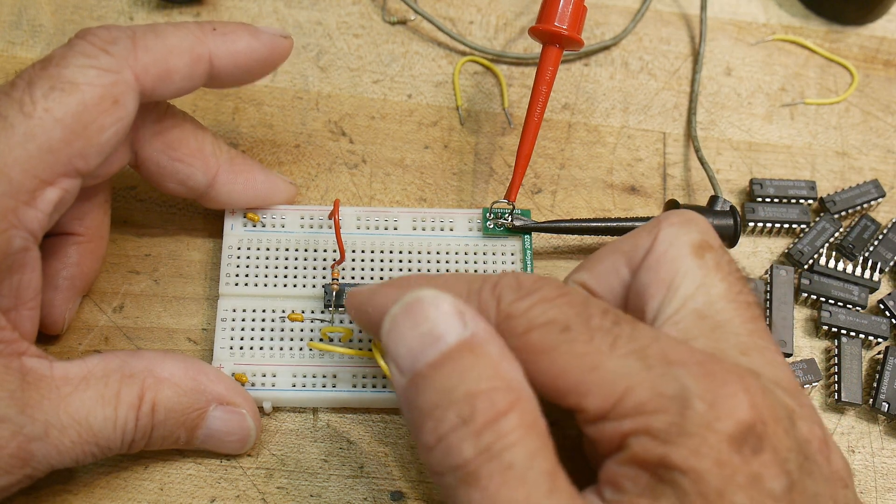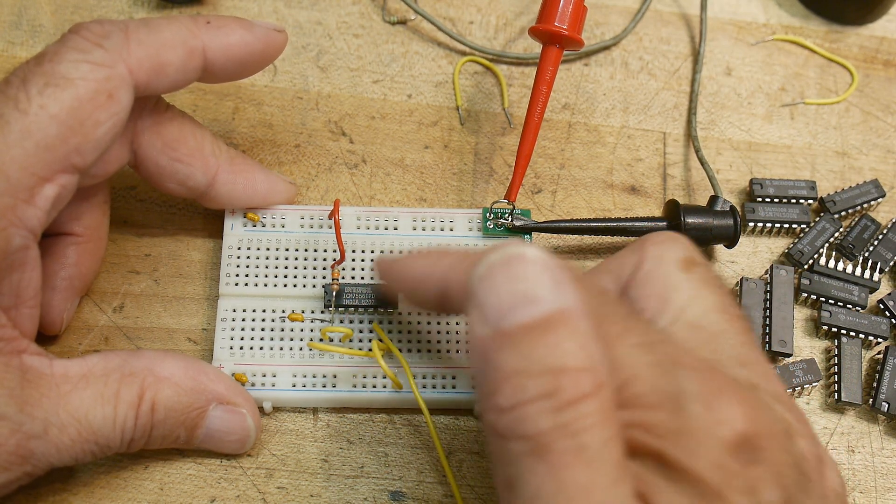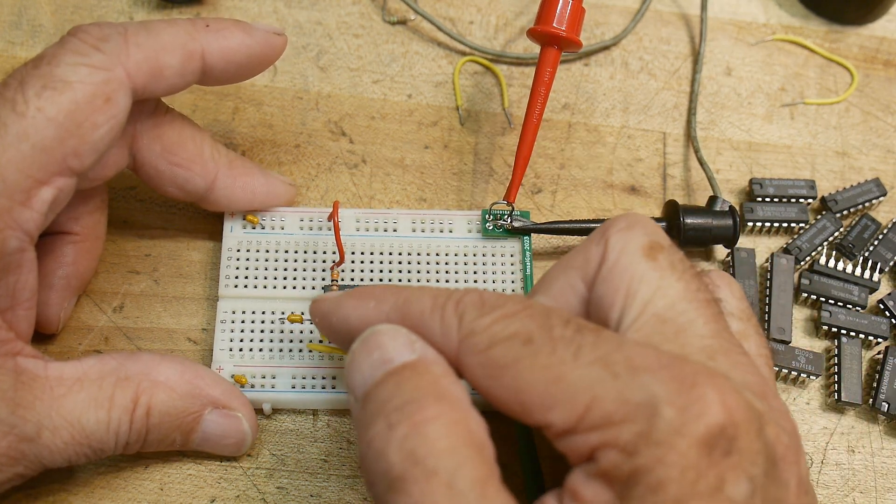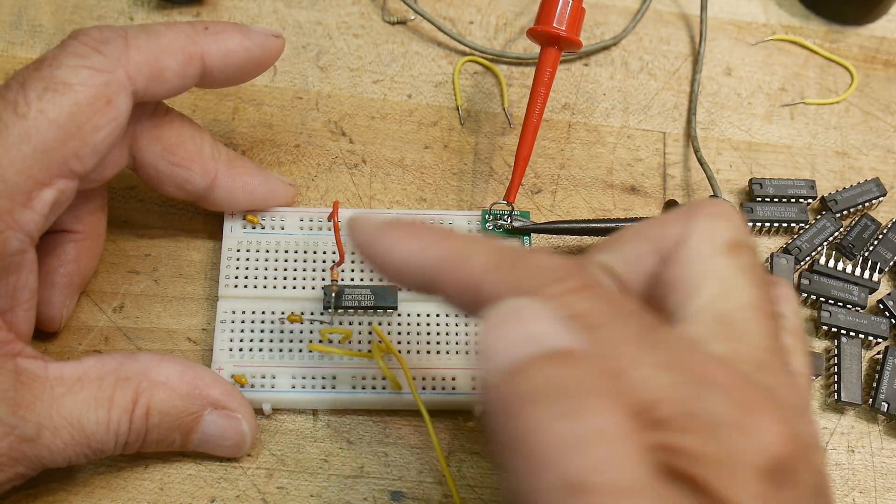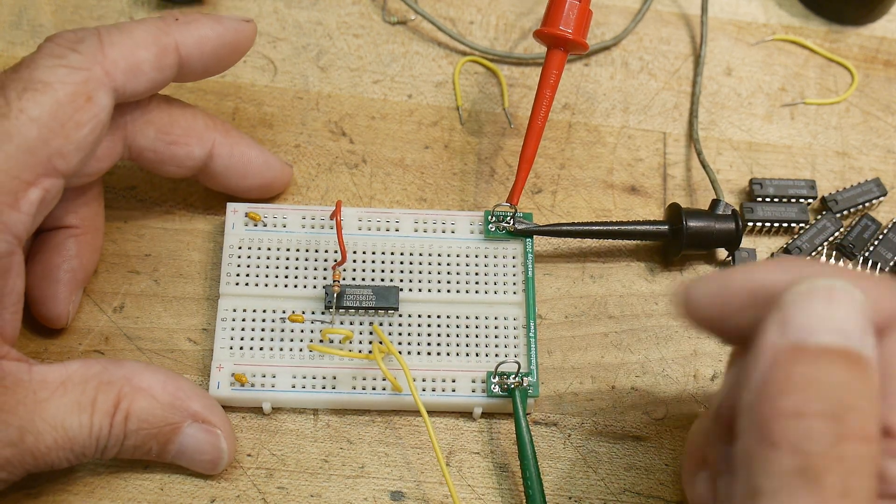And then it's going to be monitoring the threshold. It's going to be looking. And when that threshold gets up to be two-thirds of the VCC, you're going to reset the capacitor and start all over again.